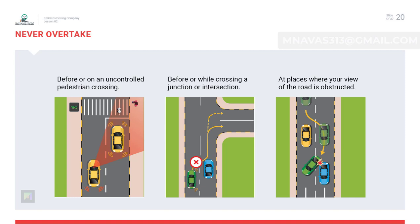Never overtake a vehicle if it is turning on the road or before any uncontrolled junction, pedestrian crossing, or intersection. You may overtake from the right side if the vehicle in front has clearly indicated by visual signal and its position that it is about to turn left. At crossroads controlled by traffic lights, and while driving uphill, overtaking is restricted — such roads are marked with a combination of solid continuous lines and broken lines. Do not overtake if the solid line is on your side.